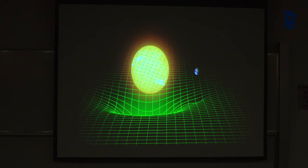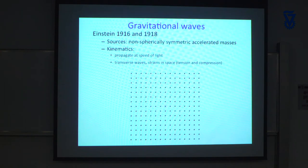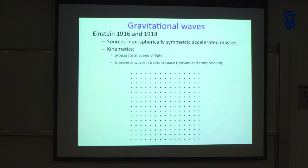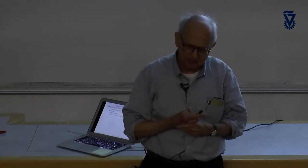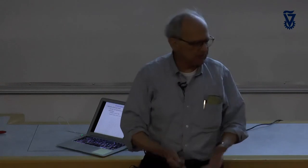Now I'll introduce you to gravitational waves. Gravitational waves are expected in this theory to move at the speed of light. They are transverse waves — they do their work transverse to the direction in which they are moving. They come from accelerated masses, just very much as electromagnetic waves come from accelerated charges.